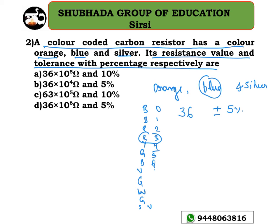I believe some color may be missing in this particular problem. I'll check and revert back in the description box. The answer is likely either 36 times 10 to the power 4 or 36 times 10 to the power 6 — one of these should be the right answer for this problem.